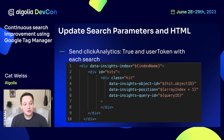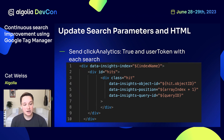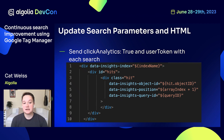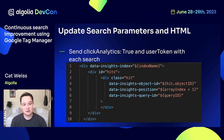The first thing you need to do is update your website. This is the format that your HTML will need to follow. You'll have a div that wraps around all of your hits that contains the index name and an attribute called Data Insights Index. Then, within each hit, you will have attributes Data Insights Object ID, Data Insights Position, and Data Insights Query ID.